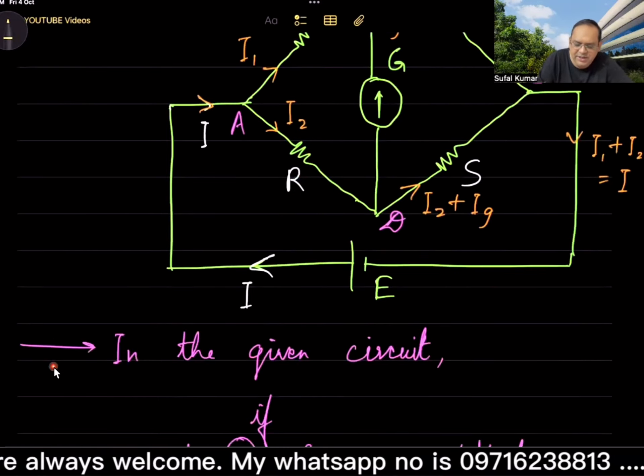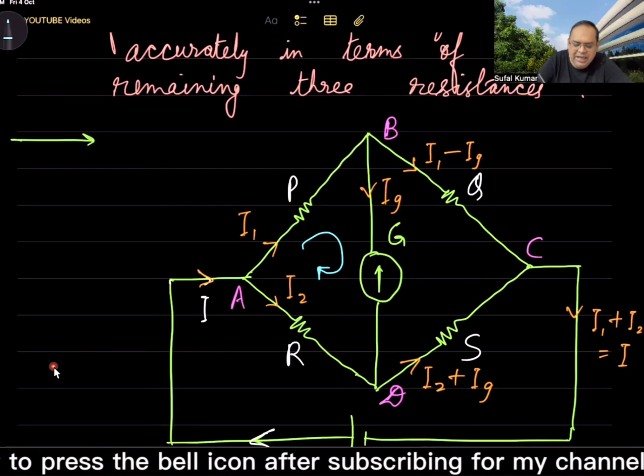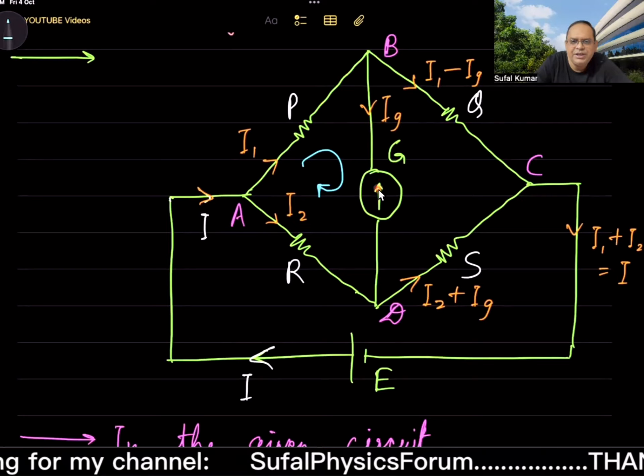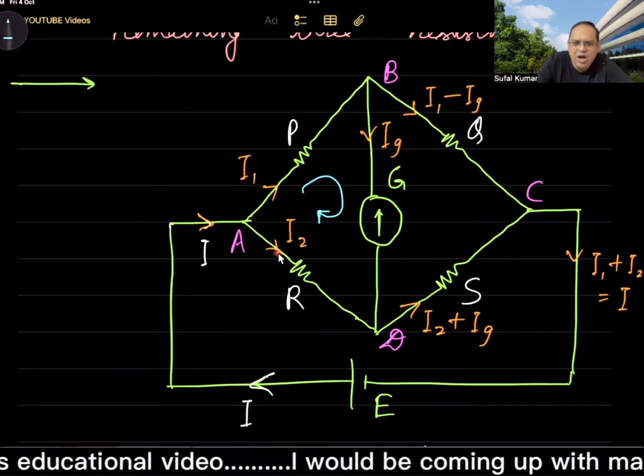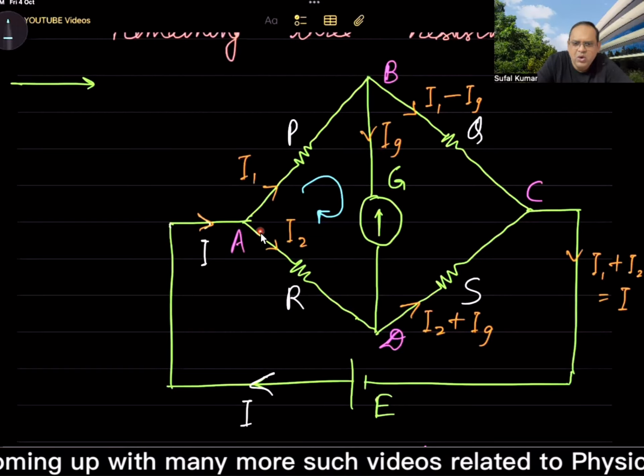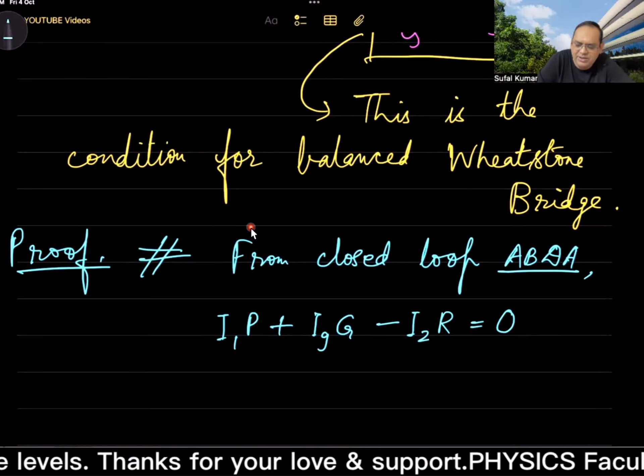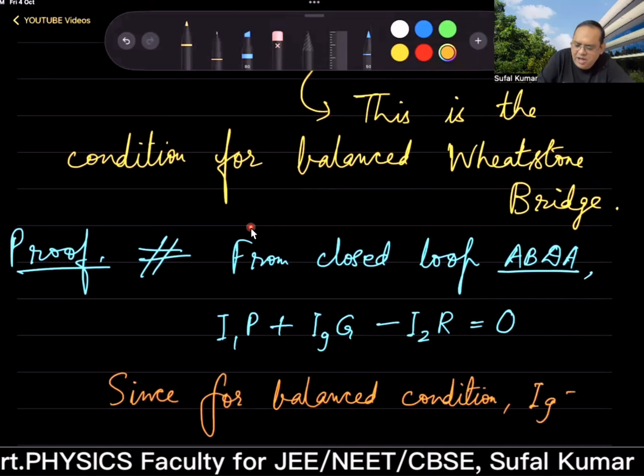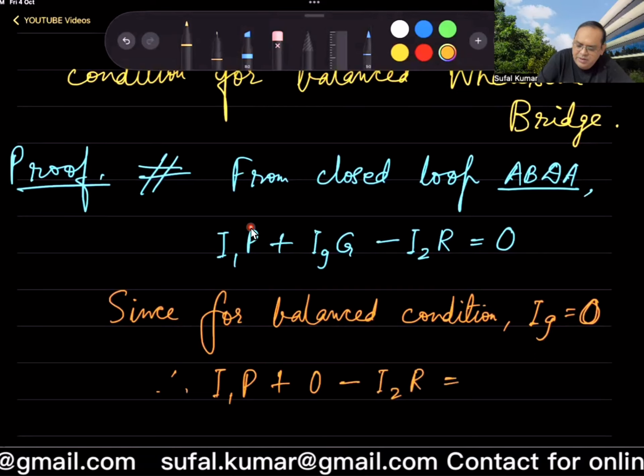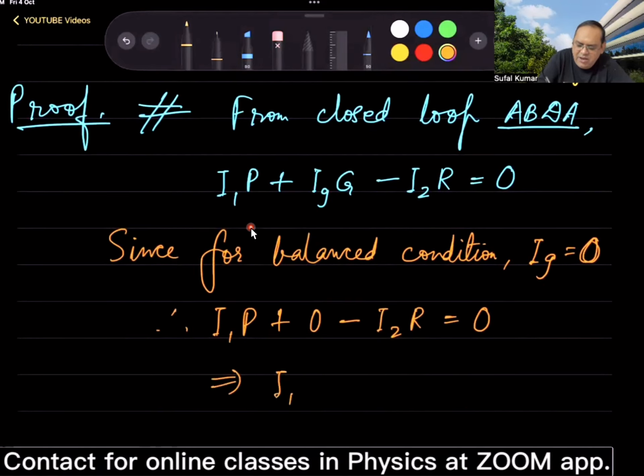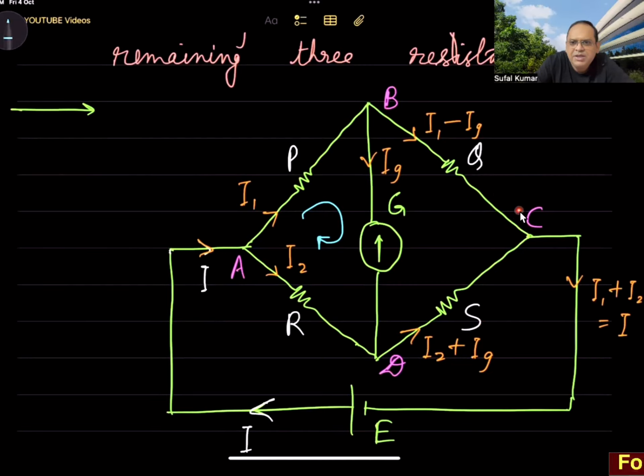VB - VD = 0. Then P/Q = R/S, and this is the condition for balance. That means the given circuit will be considered balanced if this condition fulfills, otherwise the given circuit won't be considered balanced.